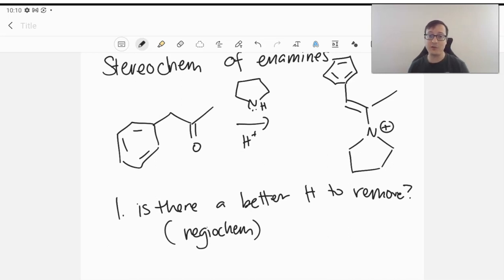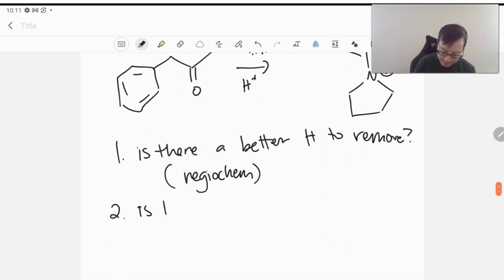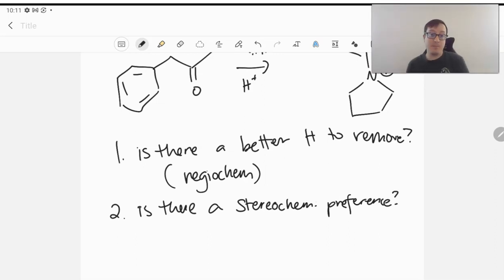So once you've identified which side gives you the better thermodynamics, which gives you the better substitution on your alkene, then you want to think, okay, is there a stereochemical preference?